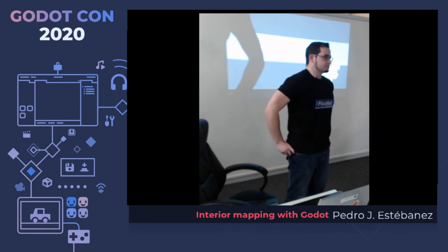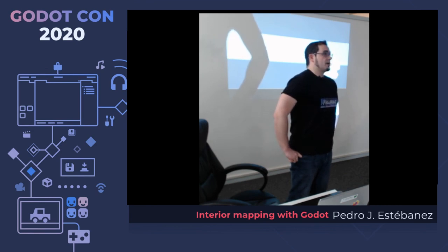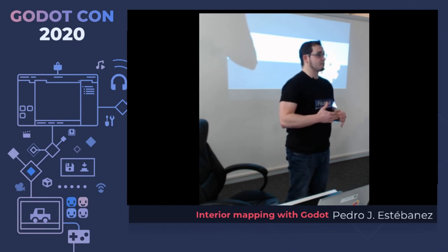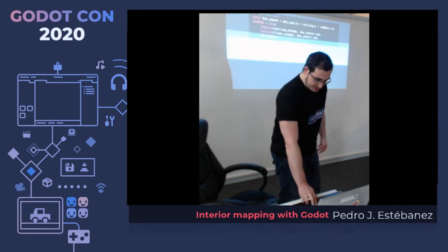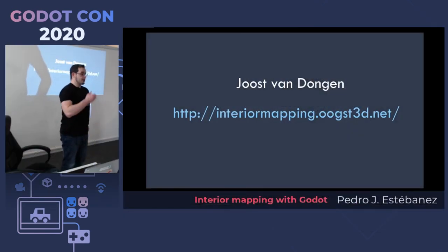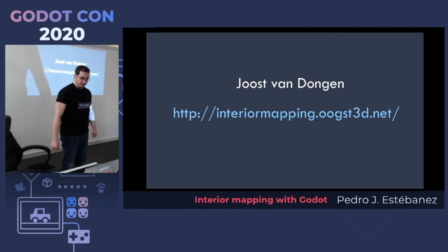Q: You said this makes sense for a large number of buildings — can you give approximate numbers? A: I don't remember the exact numbers and haven't tested it myself. I got that information from the original paper. If you search for 'interior mapping' you'll find the PDF as the first result, and it has interesting graphs showing where the performance curves start to diverge.